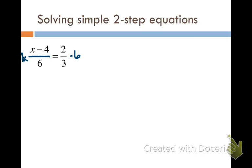On the left side, your 6's cancel out and you just have x minus 4. On the right side, 2 thirds times 6. Well, we want to know what 2 thirds of 6 is. If you think about what 1 third of 6 is, that's 2, because 2 plus 2 plus 2 is 6. So I need 2 of those, that's going to be 4. You could also use your calculator here. Put in the fraction 2 thirds times 6, you'll get out 4.